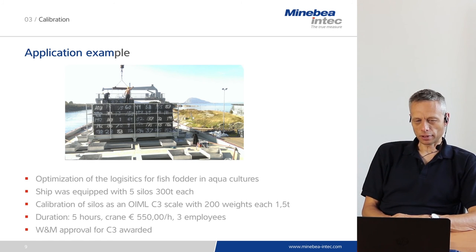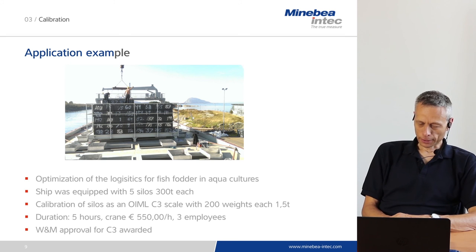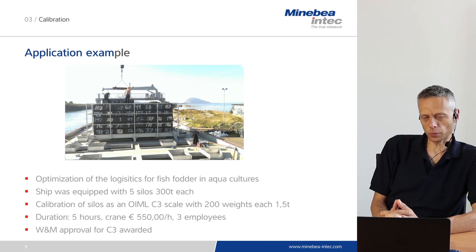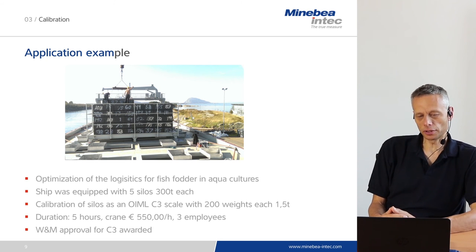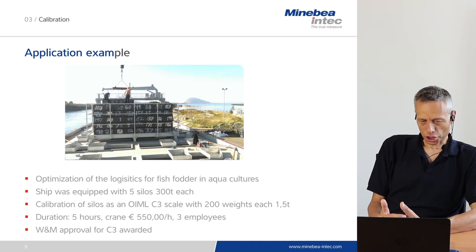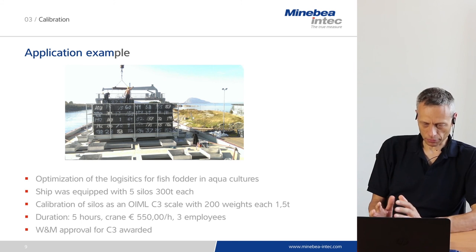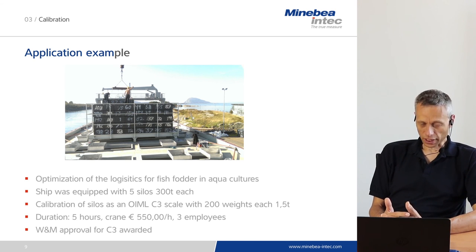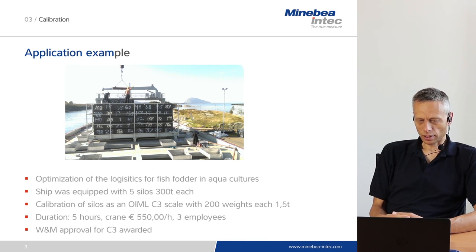Finally, I would like to show you an application example of a calibration by weights, to give you an impression of the amount of work and material necessary to calibrate high capacity silos. The application is on a boat — a vessel used for fish fodder in aquacultures in Norway. The purpose was optimization of logistics to deliver fish fodder to fish farms. This ship was equipped with five silos of a nominal capacity of 300 tons each, and the whole system needed legal approval to deliver fish fodder directly from the boat to the fish farm by weight.